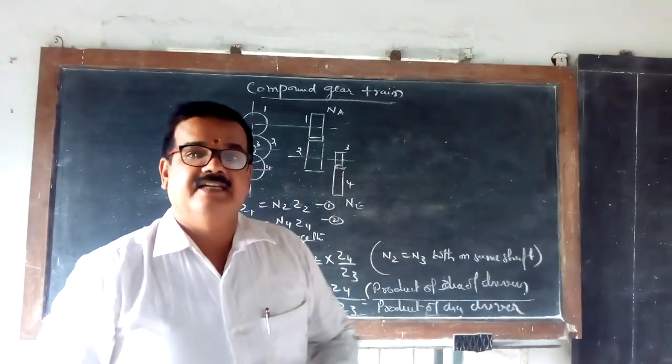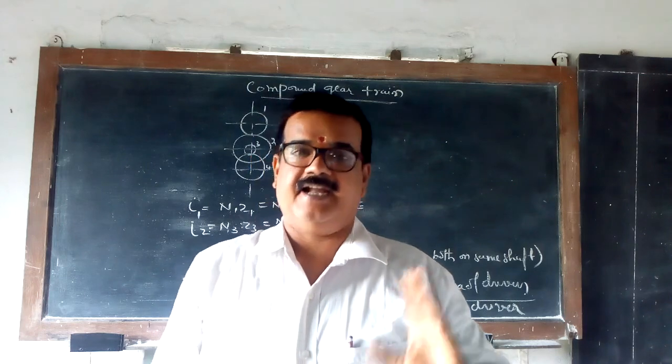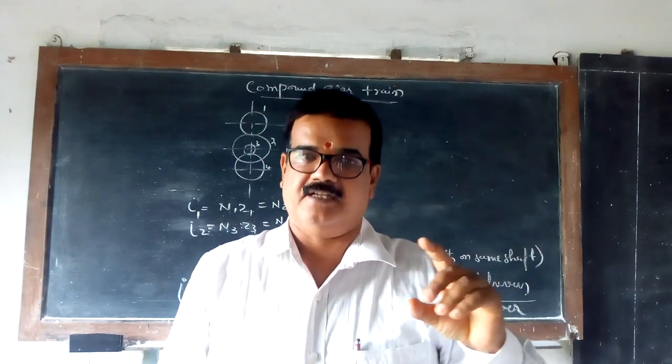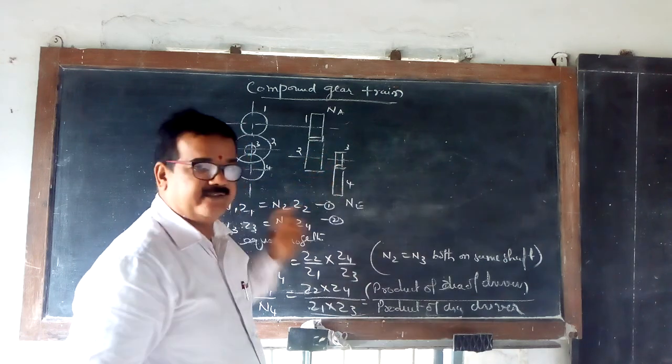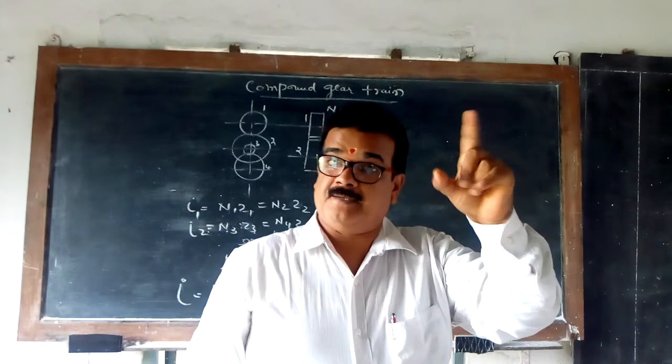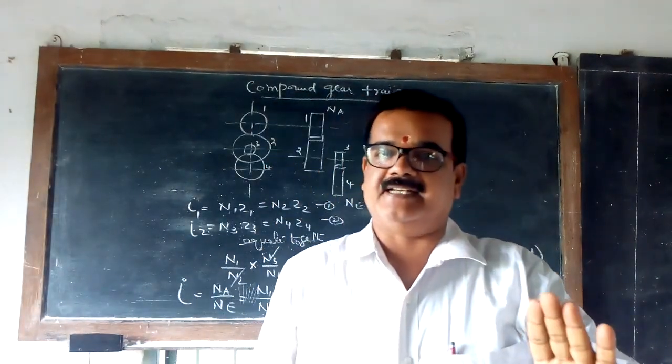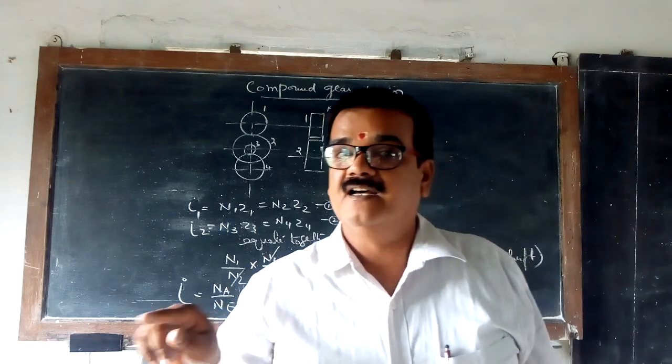Always even number represents the driven and odd numbers are representing the driver. So in this, 1 and 3 are drivers, 2 and 4 are driven. So straight away with this particular formula, N1 by N4, we can calculate the transmission ratio between the first gear and the last gear.